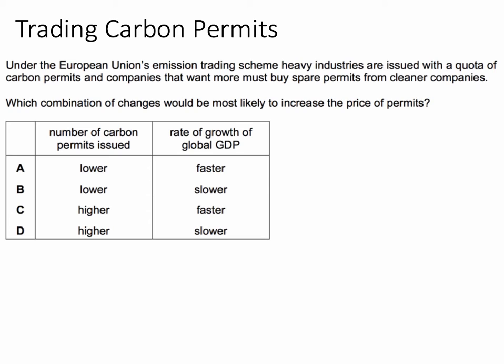Under the EU's emissions trading scheme, heavy industries are issued with a quota of carbon permits, and companies that want more must buy spare permits from cleaner companies. That's the essence of the carbon trading or emissions trading scheme. Which combination of changes shown below would be most likely to increase the price of permits? Have a go at the question — I'll be back in a few seconds with the right answer and an explanation.